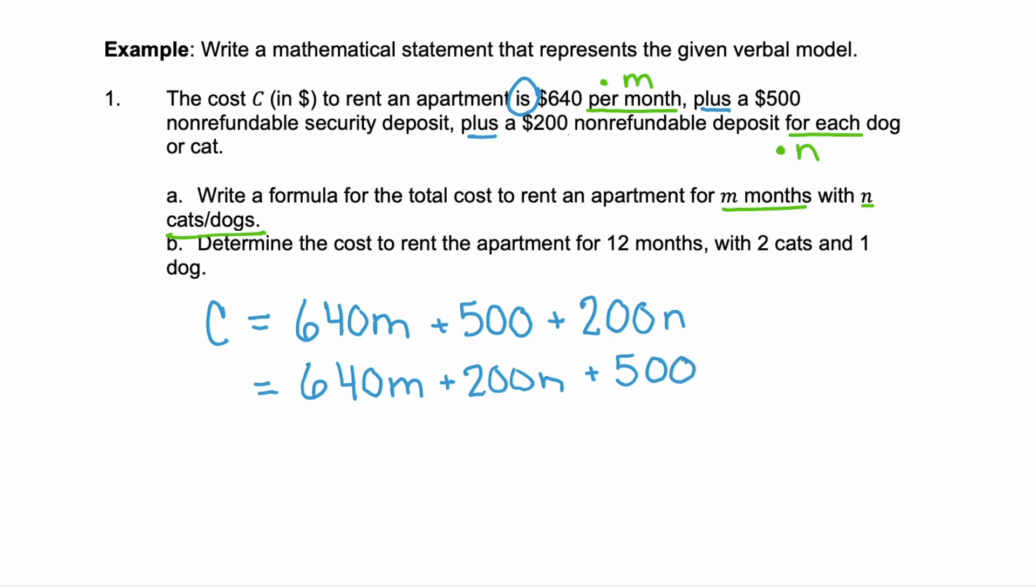Part B wants us to determine the cost to rent the apartment for 12 months. So, M is going to be 12. And we have two cats and one dog. So, N is going to be 2 plus 1 or 3.